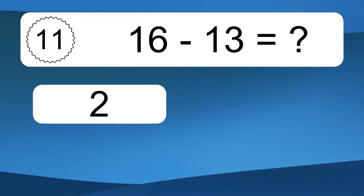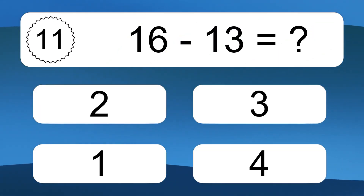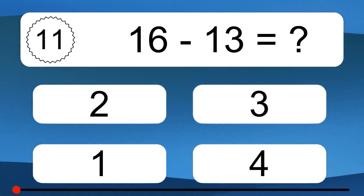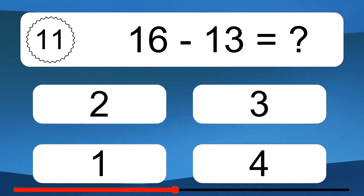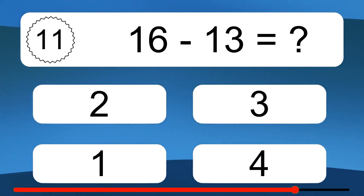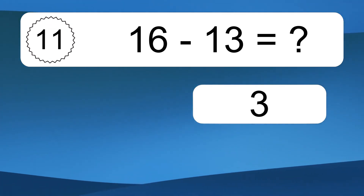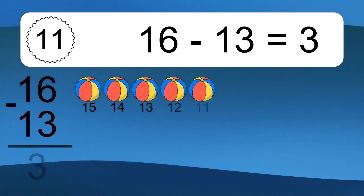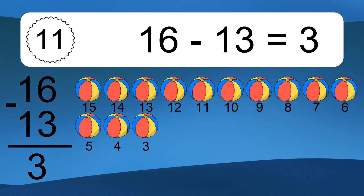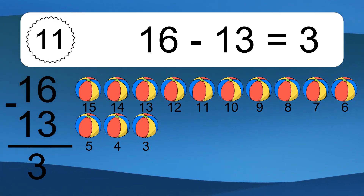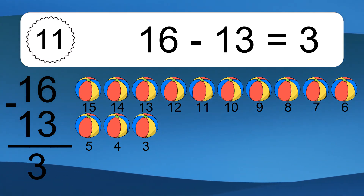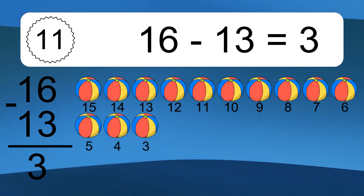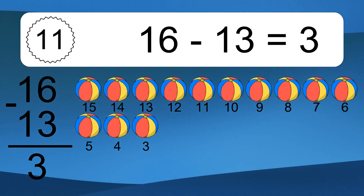16 minus 13 equals what? 16 minus 13 equals 3. Let's count it: 15, 14, 13, 12, 11, 10, 9, 8, 7, 6, 5, 4, 3.